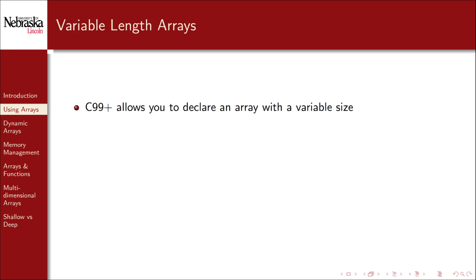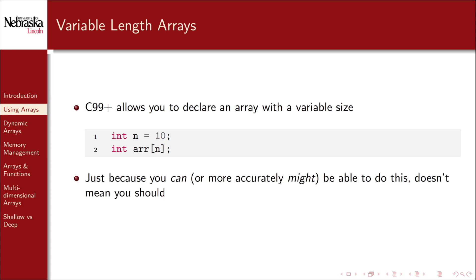C99 and later versions also allow you to declare a static array using a variable size. That is, instead of hard coding a value in the size specification you can use a value stored in a variable as in this example. However just because you can do something doesn't mean that you should. I mentioned variable length arrays because you will likely see them out in the wild but you should avoid using them in general.